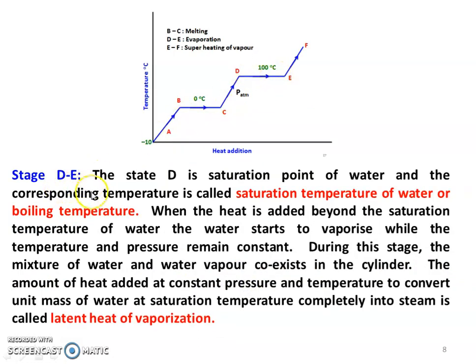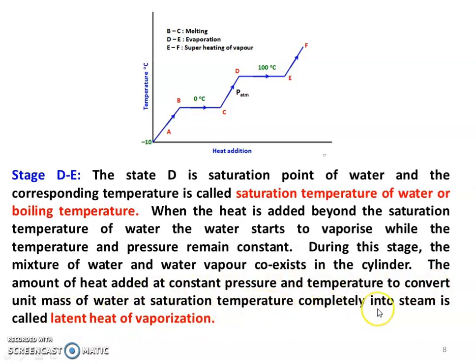Stage D to E: state D is the saturation point of water, and the corresponding temperature is called the saturation temperature or boiling temperature. When heat is added beyond the saturation temperature, the water starts to vaporize while temperature and pressure remain constant. During this stage, a mixture of water and water vapor co-exist in the cylinder. The heat added at constant pressure and temperature to convert unit mass of water at saturation temperature completely into steam is called the latent heat of vaporization.